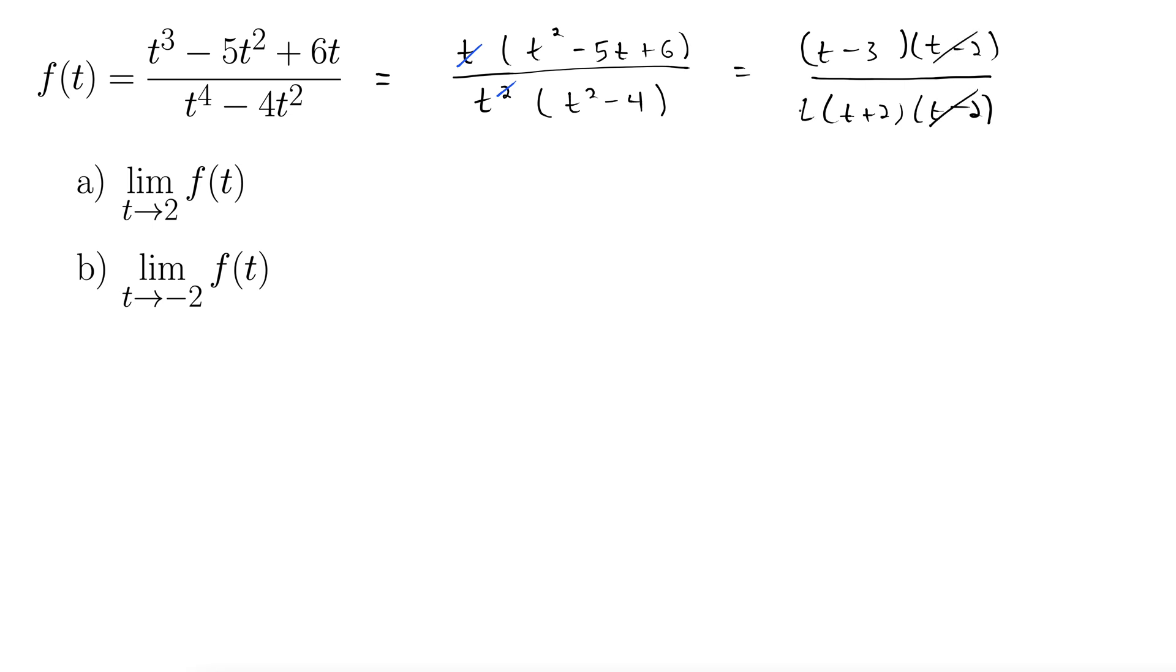Even more cancellation. Oh don't forget this t is still hanging out from over here. So finally all of that we have t minus 3 over t times t plus 2.